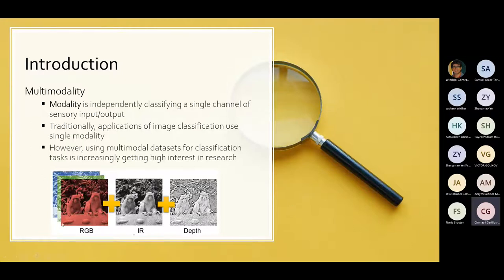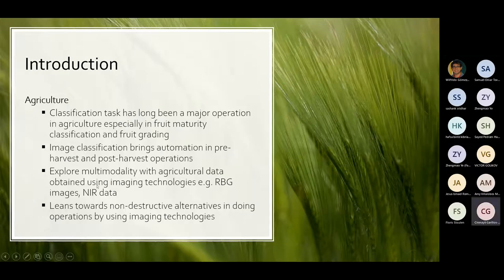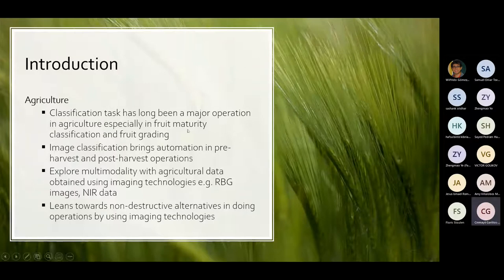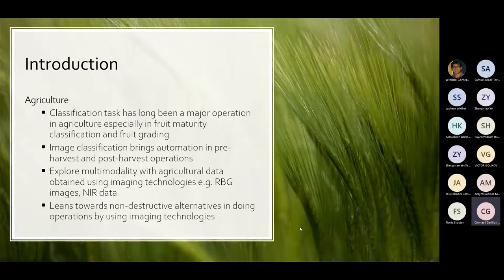Modality is independently classifying a single channel of sensory input or output, and traditionally applications of image classification use single modality. However, using multi-modality datasets for classification tasks is increasingly getting high interest in research. For instance, we can integrate RGB images with an infrared image and its depth map in order to produce a more sensitive analysis and precise results. In agriculture, classification tasks have long been a major operation, especially in fruit maturity classification and fruit rating. Image classification brings automation in pre-harvest and post-harvest operations, and most research studies explore multi-modality with agricultural data obtained using imaging technologies like RGB images and NIR data.